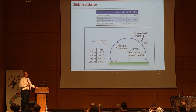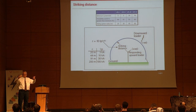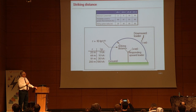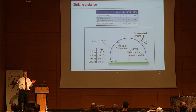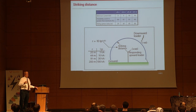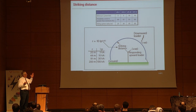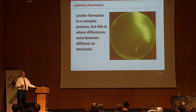For protection level one at 99% protection, applying the electrogeometric model — rolling a sphere with a radius of 20 meters over the structure — I still have a 1% chance that a 3 kA current will bypass my terminal and strike the structure. For protection level four, the bypass strike could be up to 16 kiloamps in intensity. That's where the protection levels come from. This laboratory picture shows how upward and downward leaders progress.